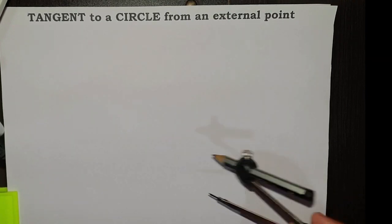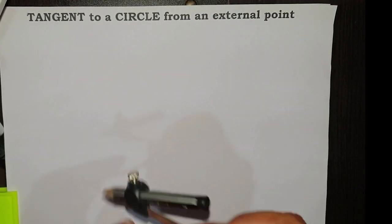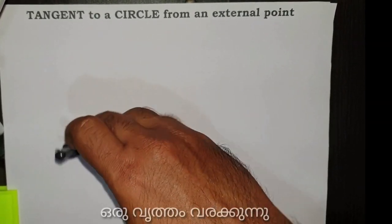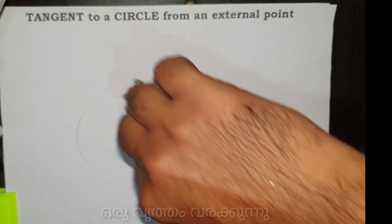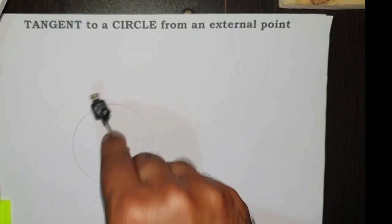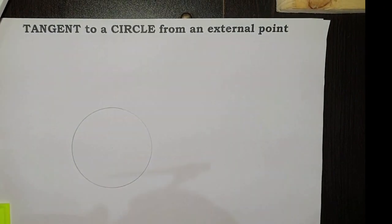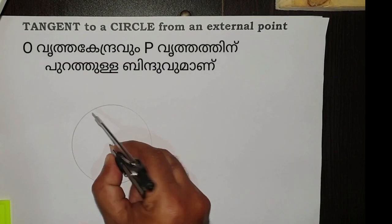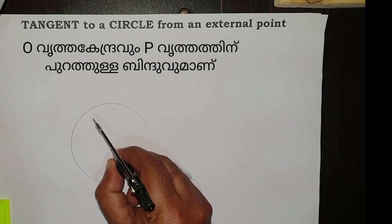Tangent to a circle from an external point. So, first we draw a circle with any radius. This is our circle and this is the center of the circle, say O.